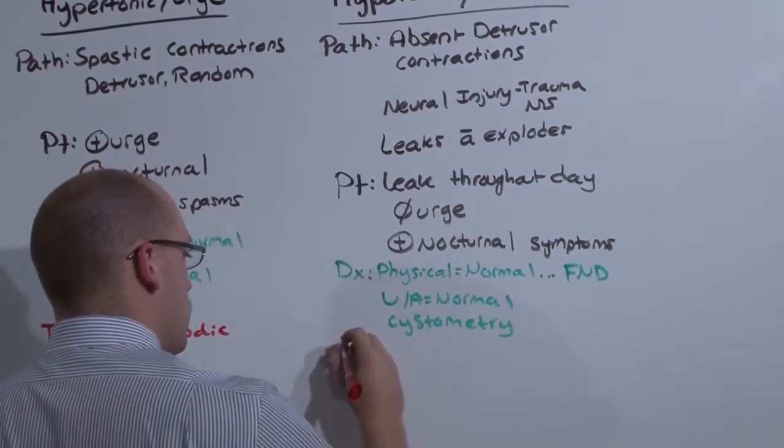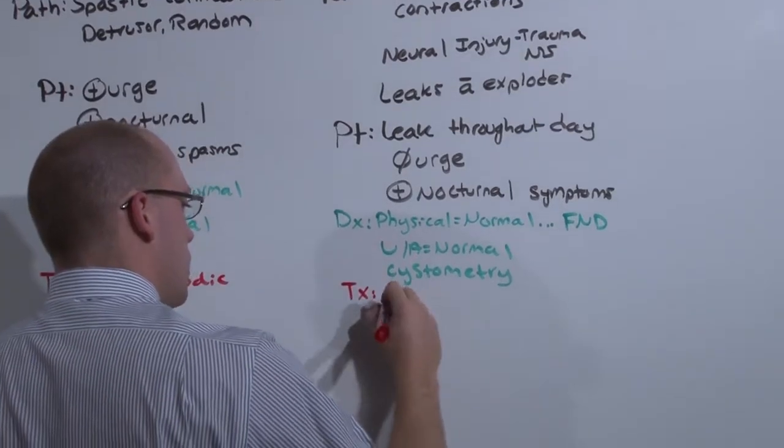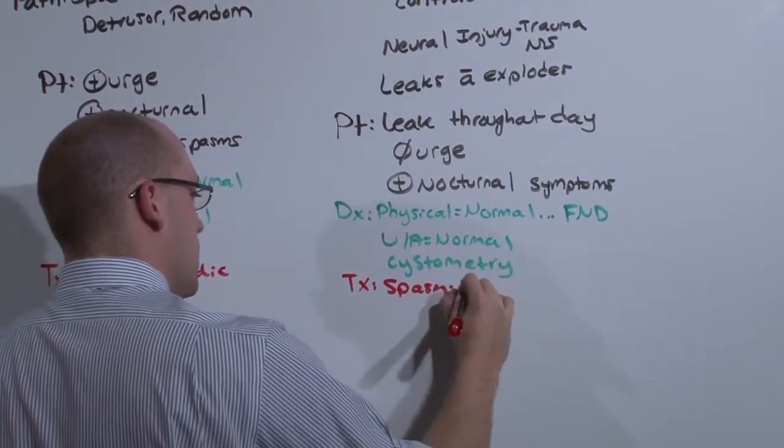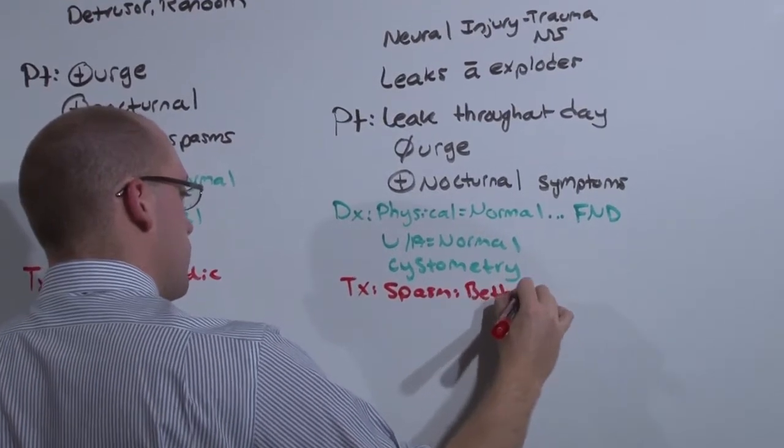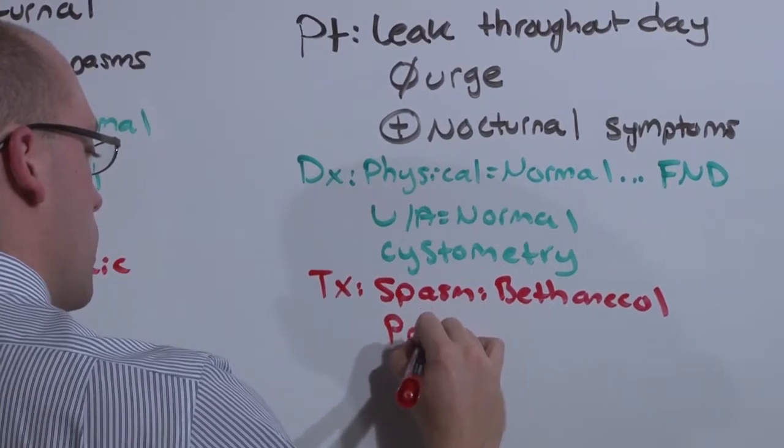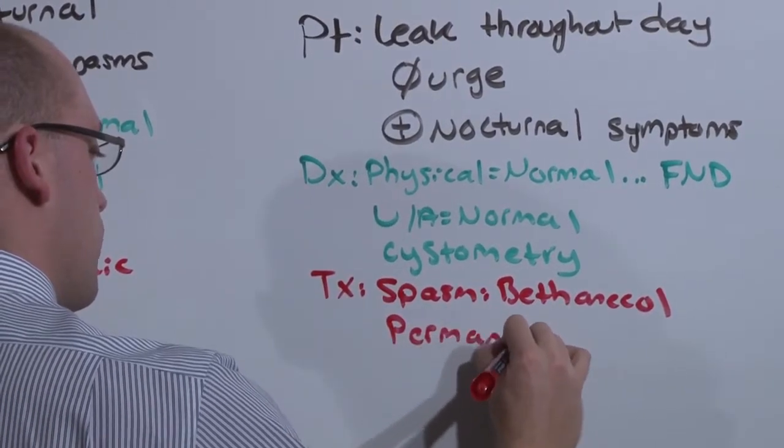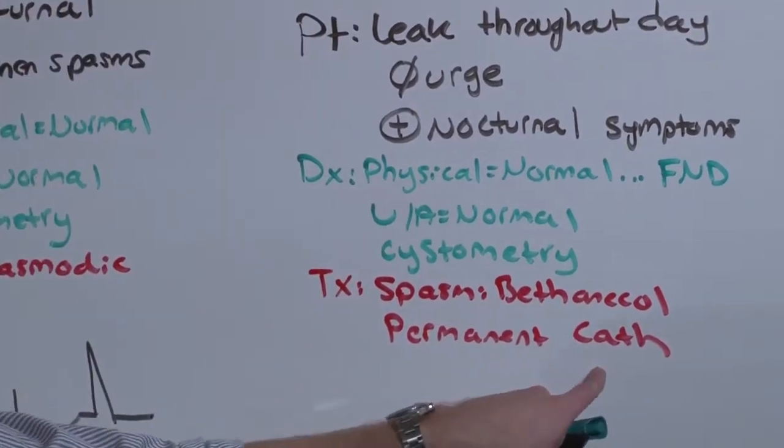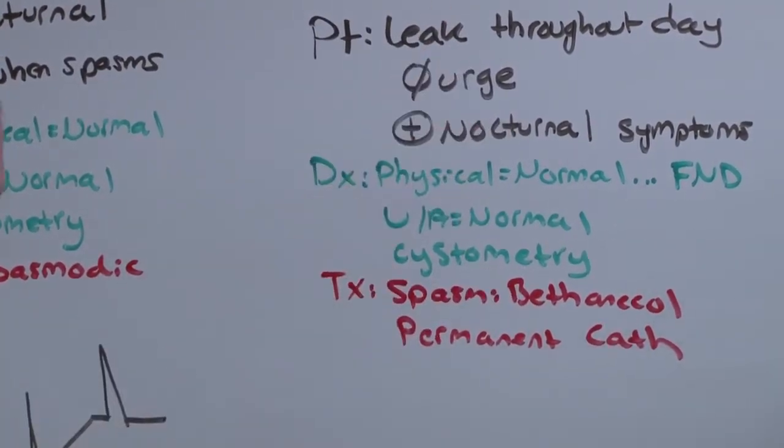The treatment is to cause spasm, and that is with bethanechol. But most of these patients require a permanent Foley catheter, such that we constantly drain the bladder mechanically rather than asking them to do it.